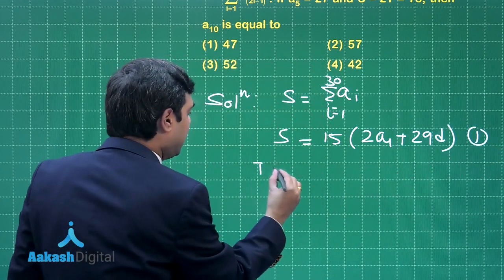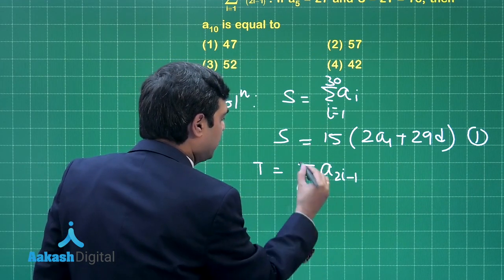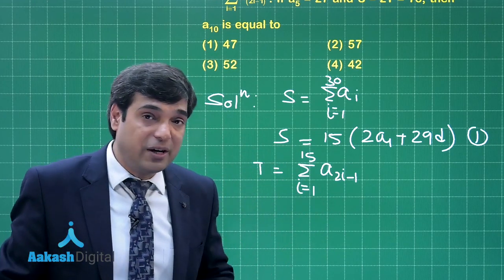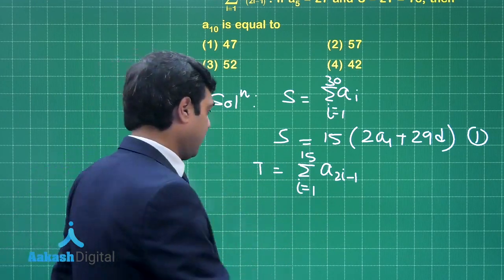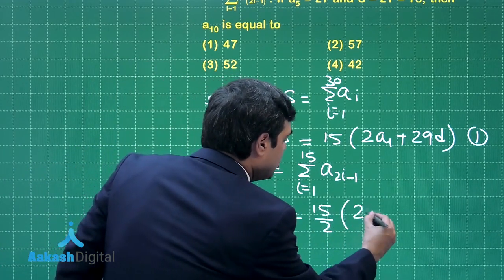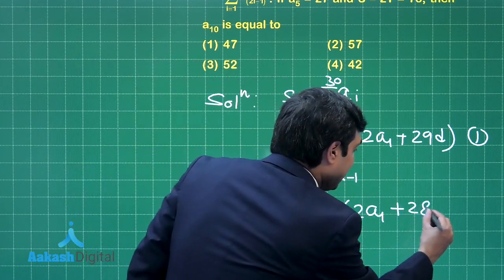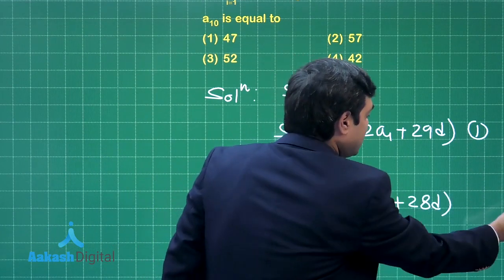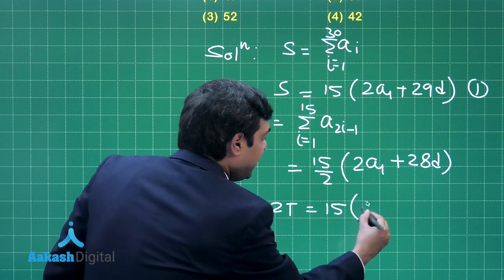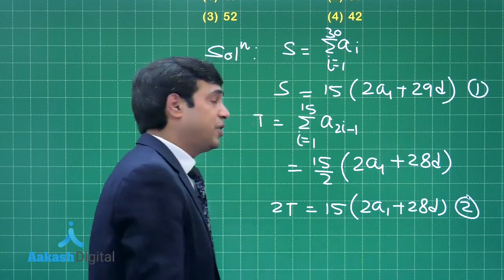Next, T, that is summation a₂ᵢ₋₁, i=1 to 15, that means we are saying a₁ + a₃ + a₅. So what is the common difference here? It is 2d this time. So this is equal to 15/2 multiplied with 2a₁, plus common difference is 2d, so it is 28d here. Just cross multiply by 2 - this gives you 2T = 15 into (2a₁ + 28d). Mark it as equation number 2.